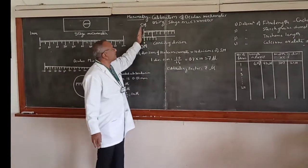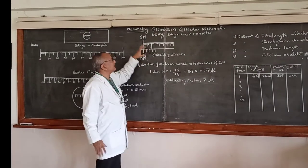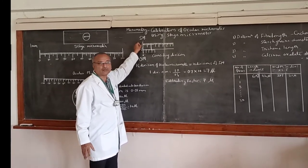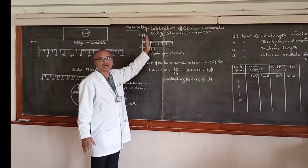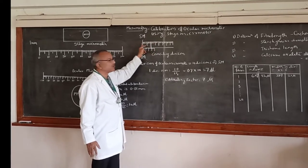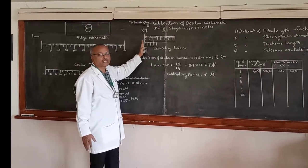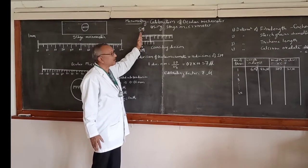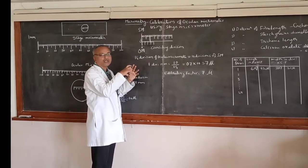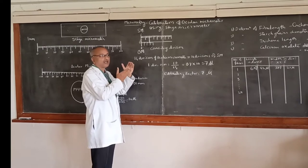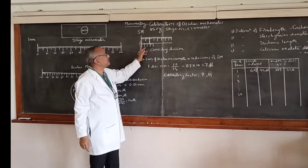When adjusting the micrometer, we bring the ocular micrometer to the superimposition position, aligning either the 0 of the stage micrometer or any convenient division that makes measurement easier. You can go for 0, 10, 20, and so on. Then observe the ocular micrometer and superimpose the two scales, bringing them closer to find the nearest coinciding division.